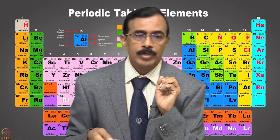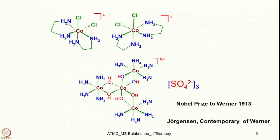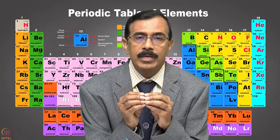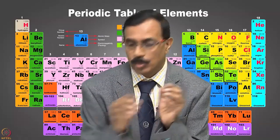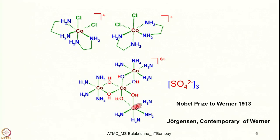One more thing we should remember is Werner making an optically active coordination compound having no carbon atoms. Jørgensen insisted one cannot make any optically active compound without a chiral carbon center. Werner made a compound where only O and N are coordinating, no carbon atoms at all. He isolated both enantiomers, and for this painstaking synthetic work he was given the Nobel Prize in 1913.